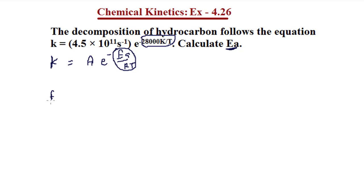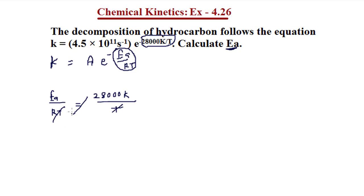As a result, we get: Ea divided by RT is equal to 28,000 K divided by T. The T terms cancel out, and we perform cross multiplication to find the Ea value. This gives us: Ea is equal to 28,000 K multiplied by R.